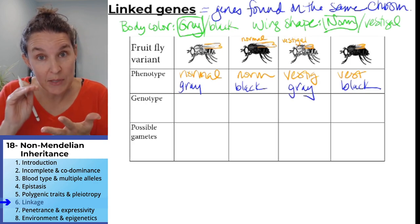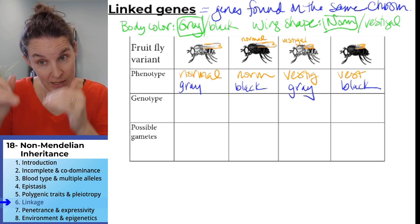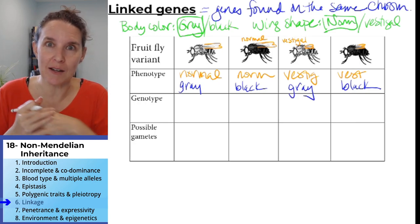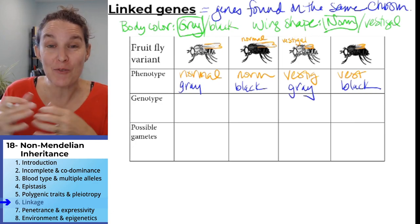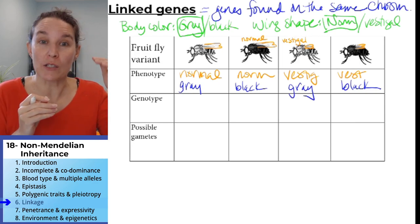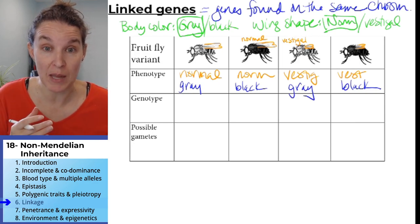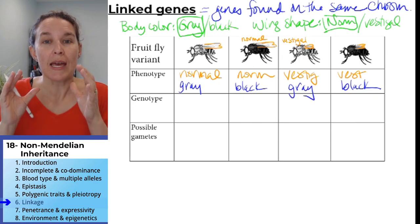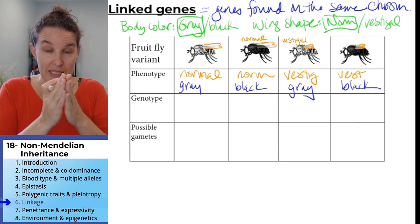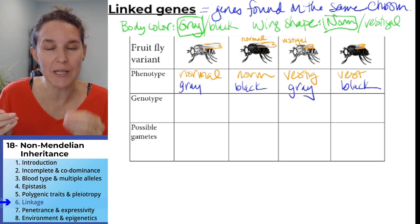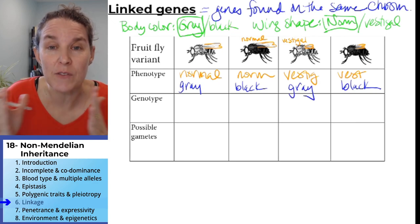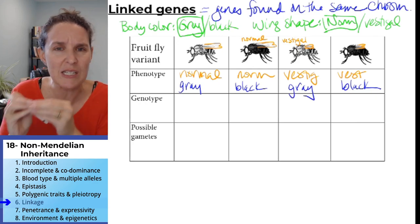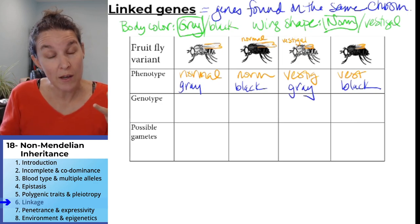Once we identify all the genotypes and the possible gametes, we're going to do some crosses — we're going to make fruit fly babies — and see what they look like. We'll look at expected phenotypes and percentages, and then I'll tell you what we actually see. Keep focused, because this is a multi-step process. First, if these two genes are found on separate chromosomes and they do the Mendelian thing with complete dominance, what are we going to expect to see?